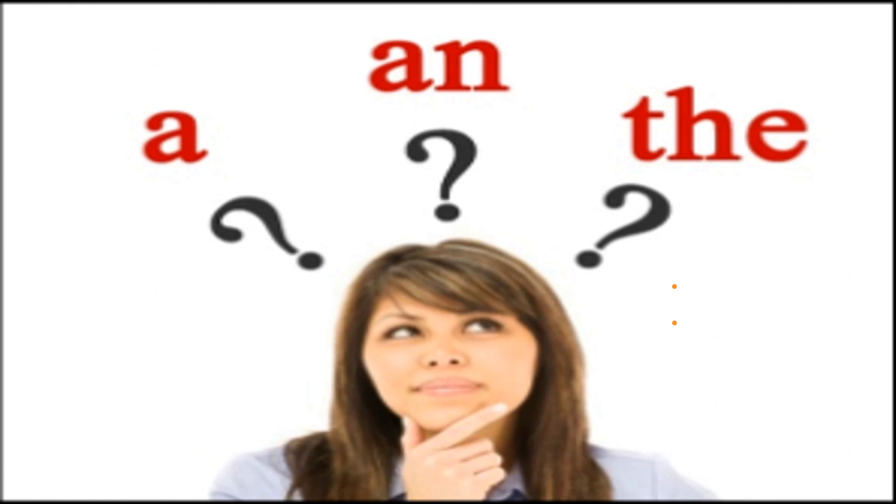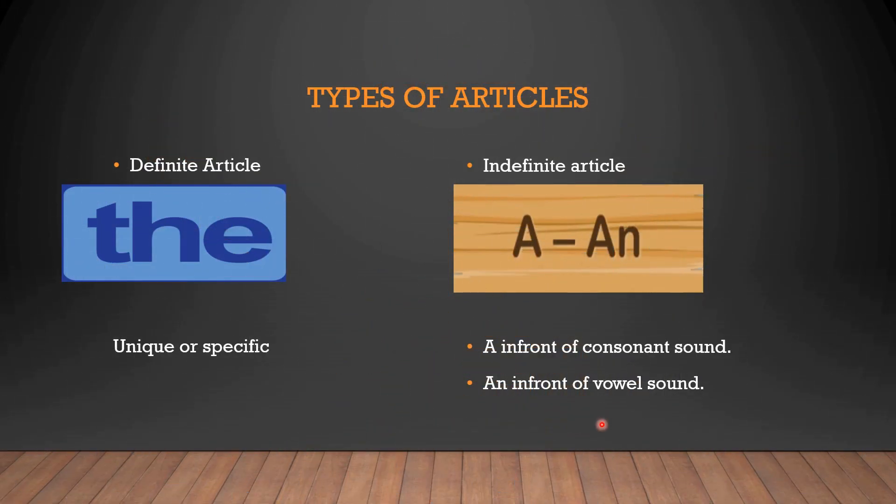So we have three article words: a, an, and the. But how do we use them according to the sentence? First we look into the types of articles. We have two types of articles.